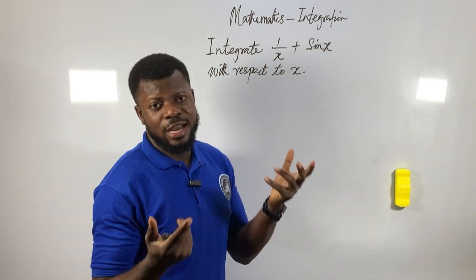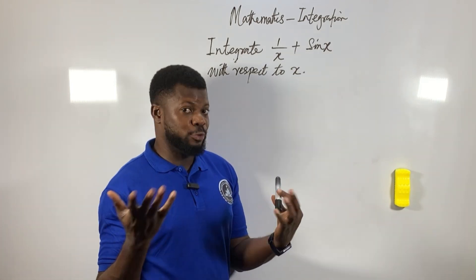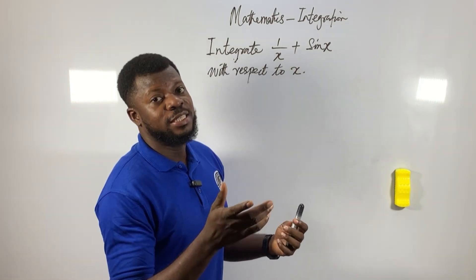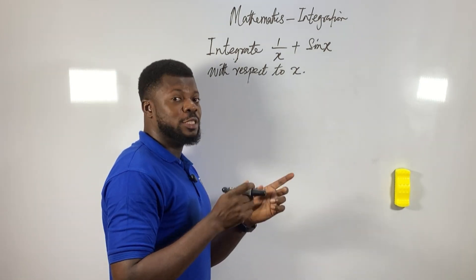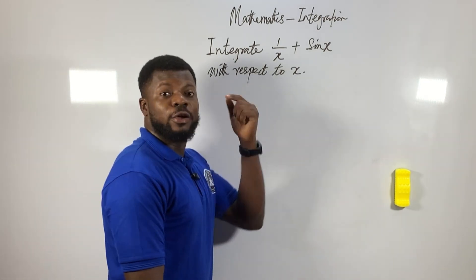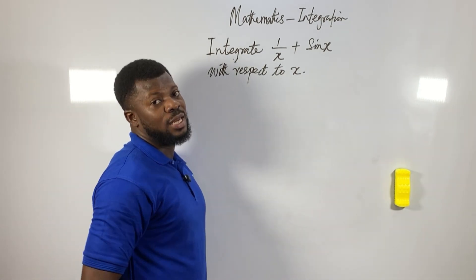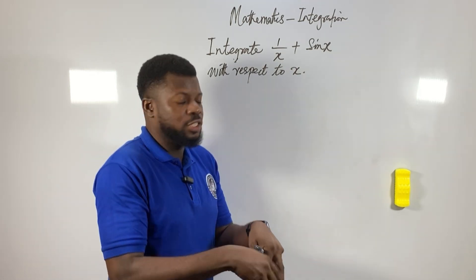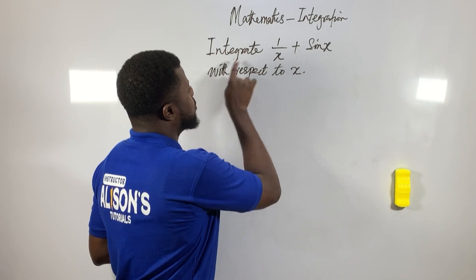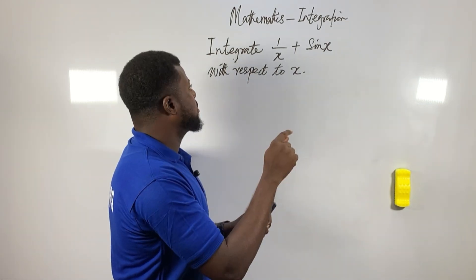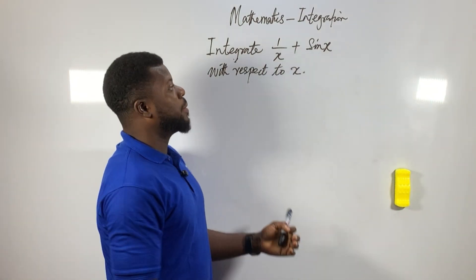Now what we are facing today is another integration problem, especially for people coming from secondary school. When I want to write JAMB I will be honest with you — I didn't do that math in secondary school. That was my limitation. But I'm going to break it down for you. Now the problem is: integrate (1/x + sin x) with respect to x.